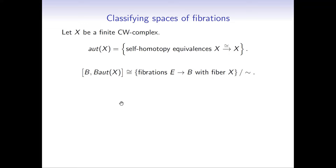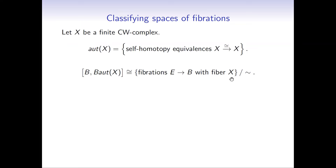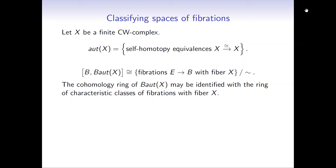Given some CW complex B, you look at homotopy classes of maps from B to the classifying space of this monoid. That's in bijection with equivalence classes of fibrations over B where the fiber is homotopy equivalent to X. So this is very classical homotopy theory. The cohomology of this classifying space may be identified with the ring of characteristic classes of fibrations with fiber X. The main problem I want to address is computing this ring of characteristic classes.